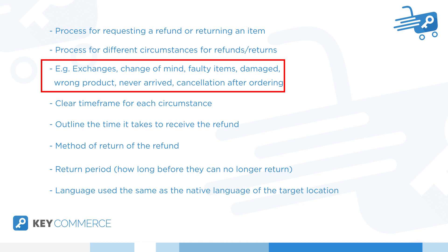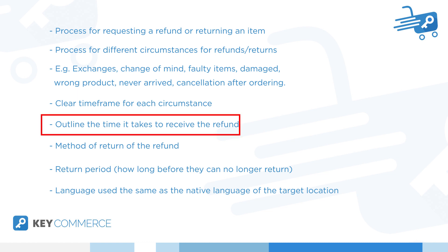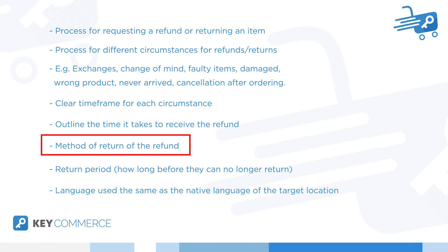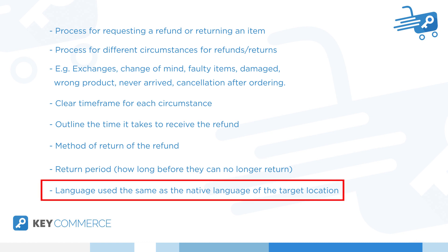What about damaged products or the wrong product? What if the product never arrives? Or what if the customer cancels after ordering? Also include timeframes for each circumstance of refund or return. Clearly outline the time it takes to receive the refund. Also indicate the method of return of the refund — is it with the same credit card the customer used to purchase, or is it with store credit? Just be clear. Also make it clear what the return period is — for how long after purchasing can a customer return their product? Also make sure the returns and refunds page is in the language of your target customers.